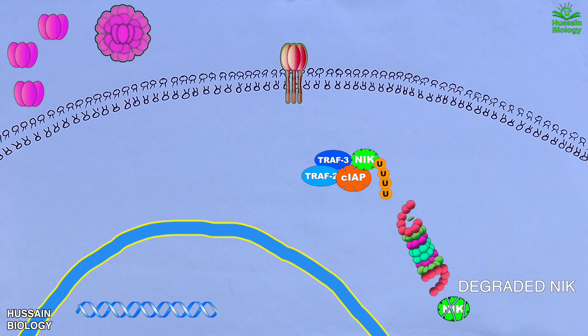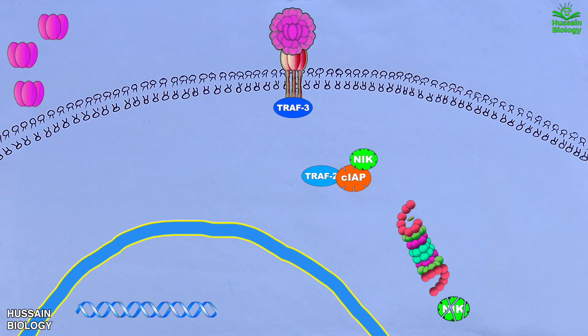This is happening without signaling. Now when BAFF comes in and binds with the BAFF receptor, it recruits TRAF3 toward the receptor. This allows the dissociation of the TRAF2-cIAP-NIK complex. Here TRAF3 is ubiquitinated and degraded.